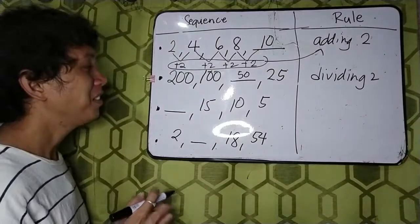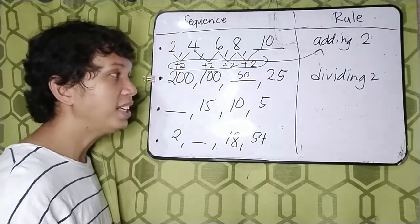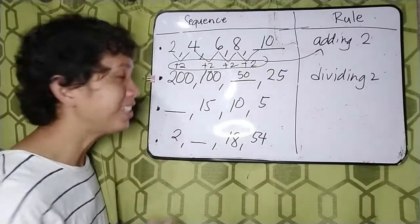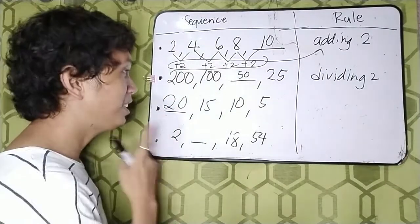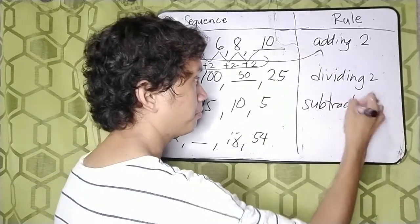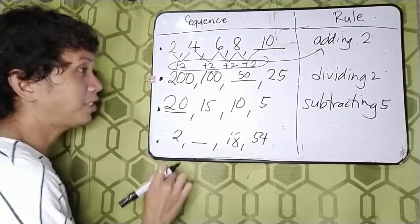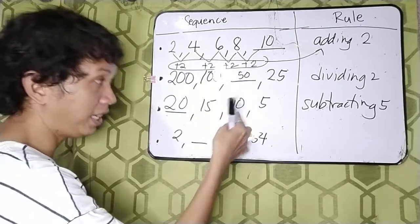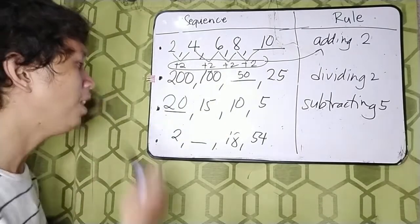Now let's go to the third sequence: blank, 15, 10, and 5. What is the missing term? Very good. The missing term is 20. How did you get 20? That is by subtracting 5 from the previous term to get the next term. So let's see: 20 minus 5 is 15, 15 minus 5 is 10, 10 minus 5 is 5. Correct!